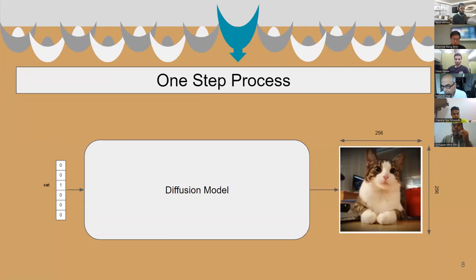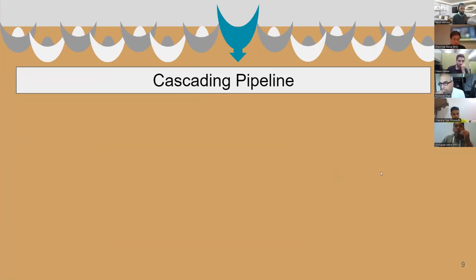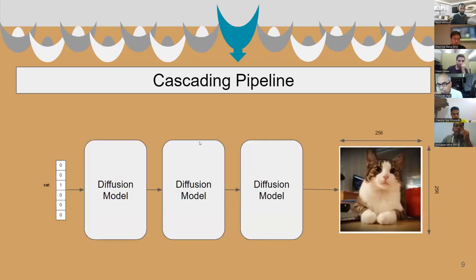Firstly, this is a general model — a diffusion model that takes a class input and outputs a high-resolution image. A cascading pipeline is just splitting this one-step process into multiple steps.